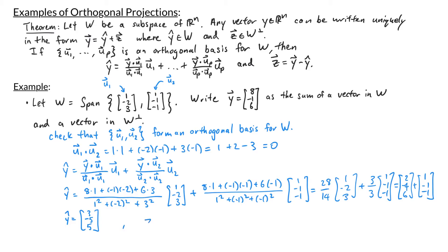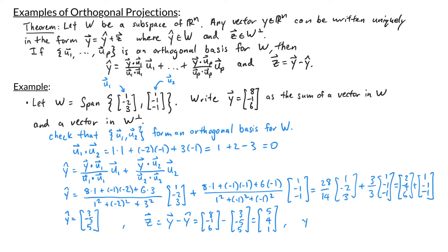Now to find z, I just take y minus y-hat. That's (8, -1, 6) minus (3, -5, 5), which gives us (5, 4, 1). So y written as a sum of a vector in w and a vector in w-perp is (3, -5, 5) plus (5, 4, 1).